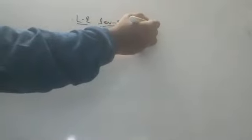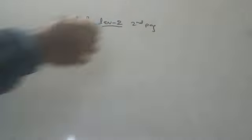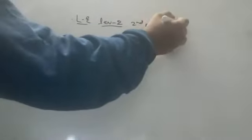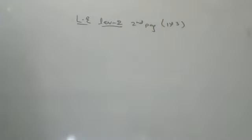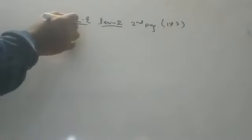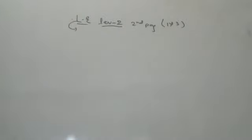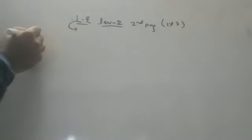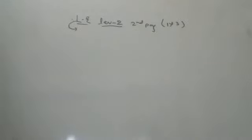Today we will discuss linear equations Level 2, second page. Yesterday I discussed the first and third pages. Now we will discuss the second page — the link is in the description. We are solving Level 2 sums using the elimination process. I will cover questions 17, 18, 19, and 20; questions 21 to 29 you should do on your own.